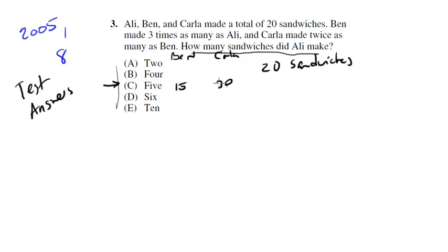Well look, their total number of sandwiches is 30, 45, 50, but they made 20. So that means it's no good. And we can probably guess then that D and E are not going to work because if 5 was too big, 6 and 10 is going to be too big.